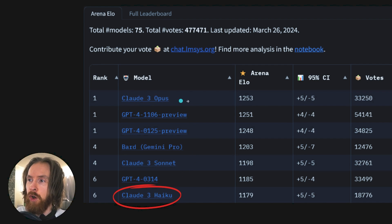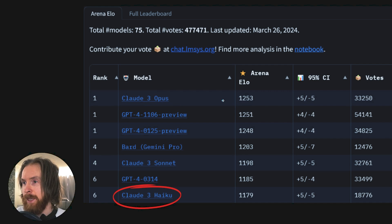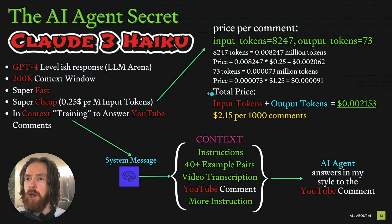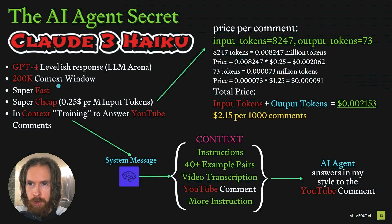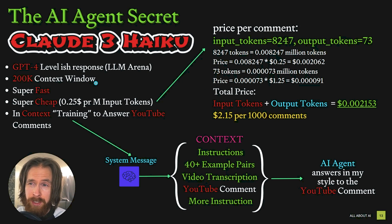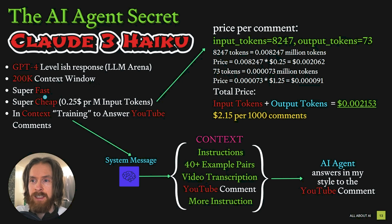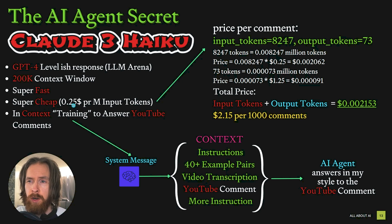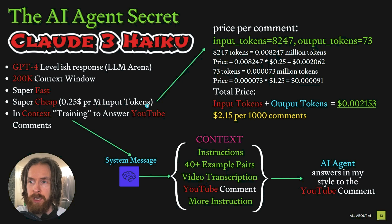And Claude 3 Opus has now climbed to the top, well deserved. But if you go back here, you can see the Claude 3 Haiku model has a 200k context window. It's super fast and it's super cheap — only a quarter of a dollar per million input tokens.